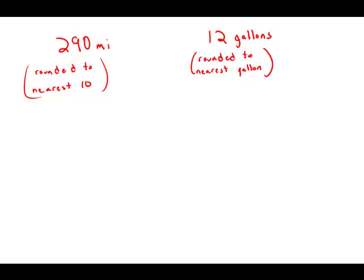The actual number of miles per gallon that Cindy's car got on this trip must have been between. So the way we think about this, if the mileage was rounded to 290, that means it could have been anywhere between 285 to 295. Somewhere in that range is what the actual mileage is.